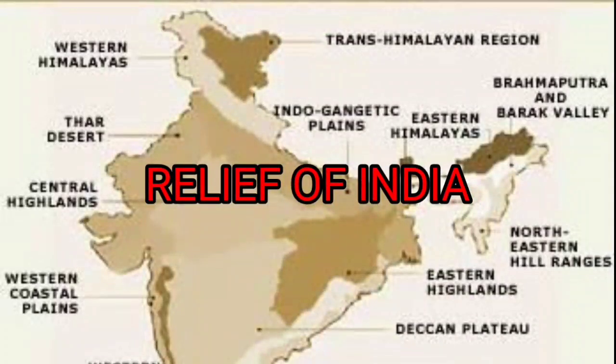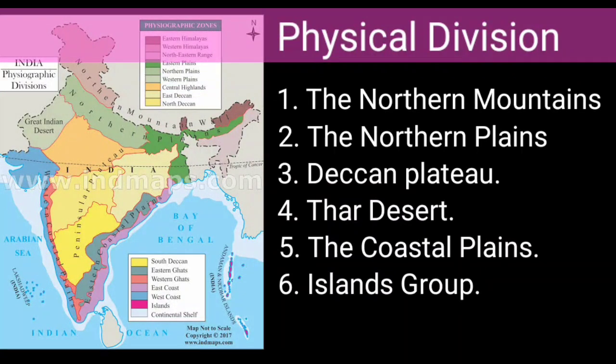India is a vast country with great diversity and relief features. Today's topic is the physical division of our country. The physical divisions are generally divided into six major groups: the northern mountains, the northern plains, the coastal plains, the desert, the island groups, and the Deccan plateau.